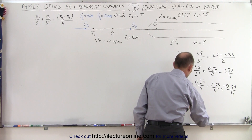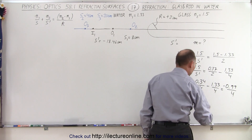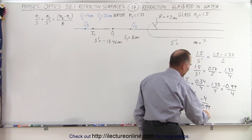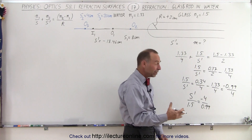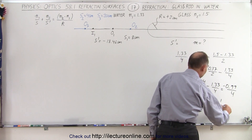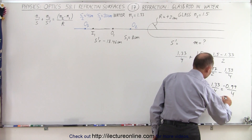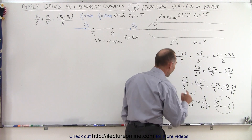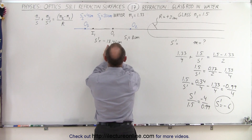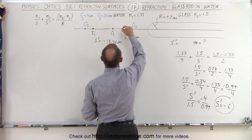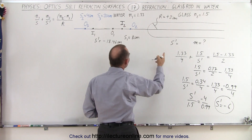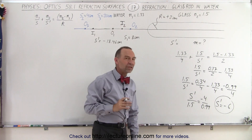So S prime over 1.5 equals negative 4 over 0.99. Taking that as close enough to 1, we multiply by 1.5, giving S prime equal to about minus 6 centimeters. What we see here is that as the object moves closer to the boundary, so does the image. Image 2 will be about here — still on the same side as the object.